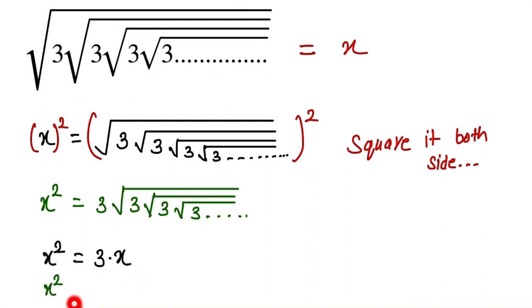So here we find x² is equal to 3x. So here x² minus this one, it goes here as minus 3x is equal to 0. So now we take the common x.